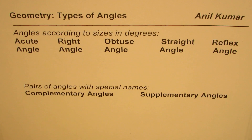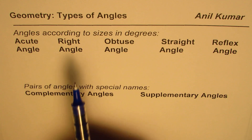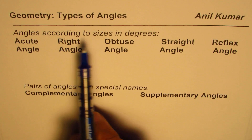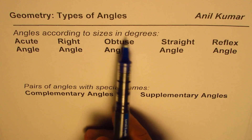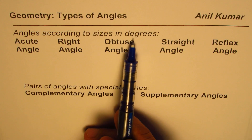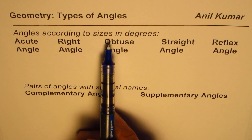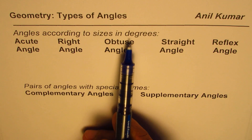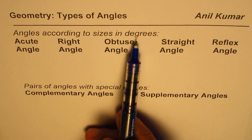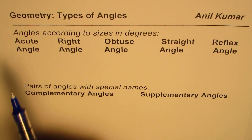I'm Anil Kumar and in this video we will understand different terms which we use for types of angles. Angles could be classified according to their sizes, and when we say sizes we normally measure angles in degrees. Based on that measurement we'll classify them.